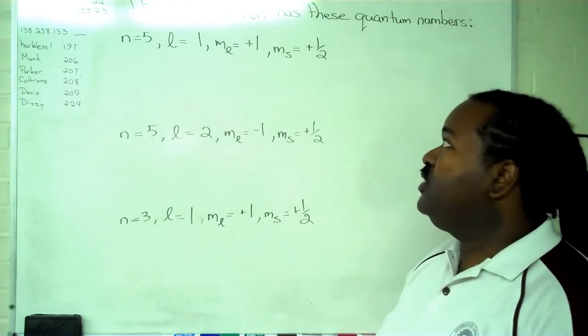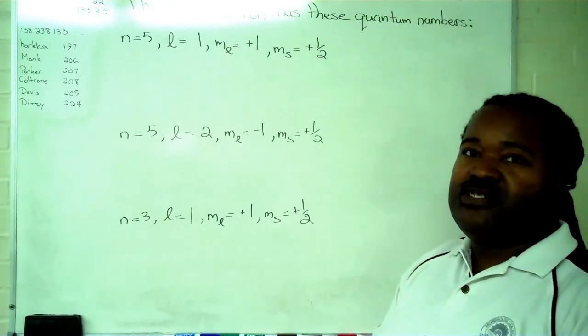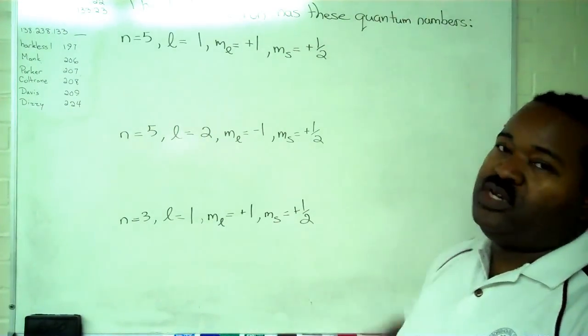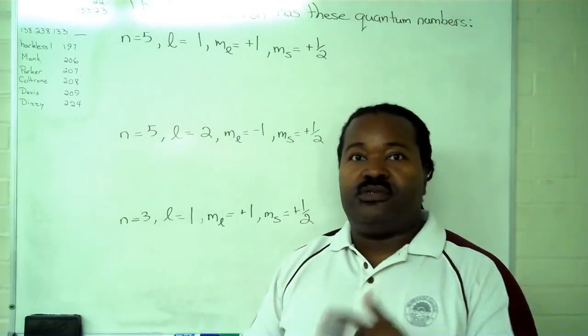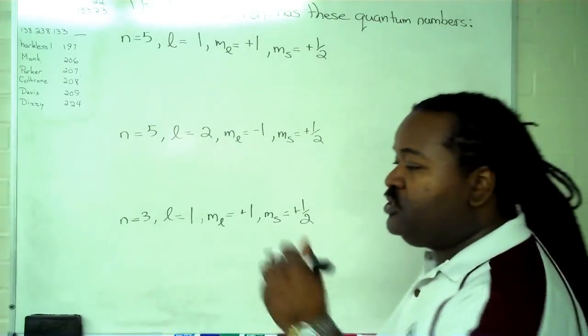First one we have n equals 5, l equals 1, m sub l is plus 1, and m sub s is plus 1 half. This is a valid set of quantum numbers, so as a result we can go through all of the steps necessary.